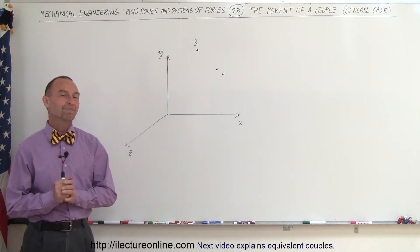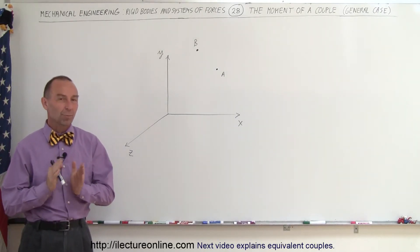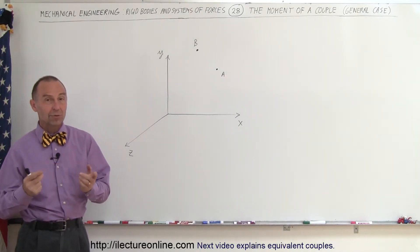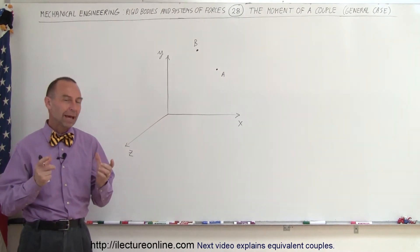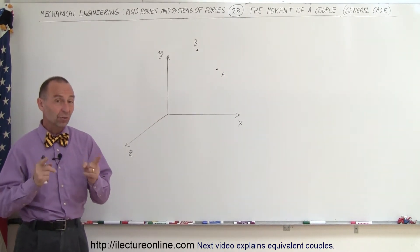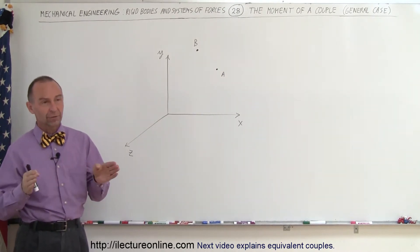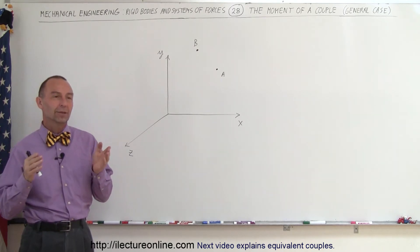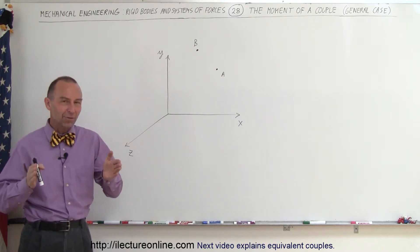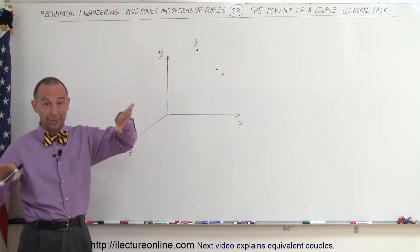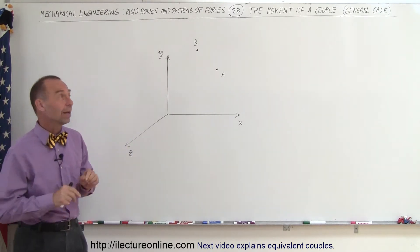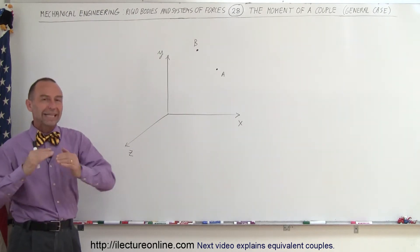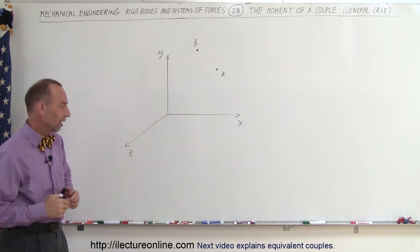Welcome to ElectronLine. Now let's talk about the moment of a couple. A couple means two forces that are equal in magnitude but opposite in direction, and any two forces that are equal in magnitude and opposite in direction form a plane in space. So here we're going to calculate the moment of a couple in a general sense.